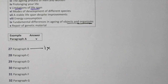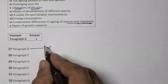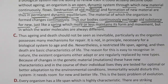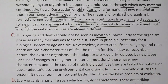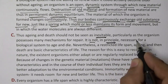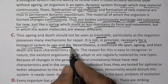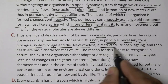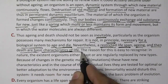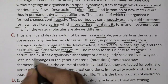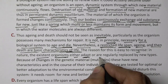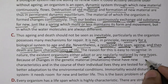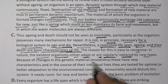At least as long as the biological system has the ability to renew itself, it could actually become older without aging. Aging and death should not be seen as inevitable, particularly as the organism possesses many mechanisms for repair. It is not in principle necessary for a biological system to age and die. Nevertheless, a restricted lifespan, aging, and then death are basic characteristics of life. Existing organisms either adapt or are regularly replaced by new ones because of changes in genetic material — that is, mutation.